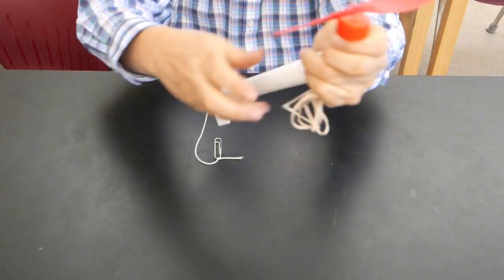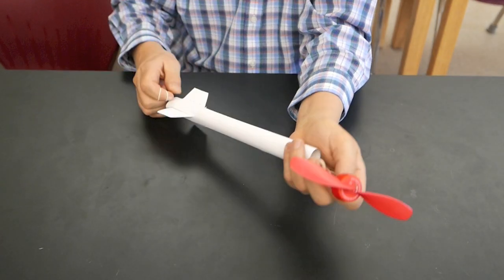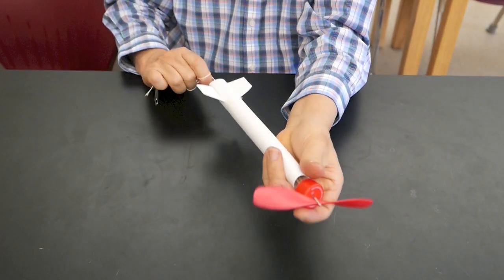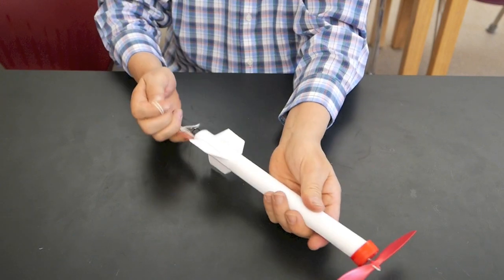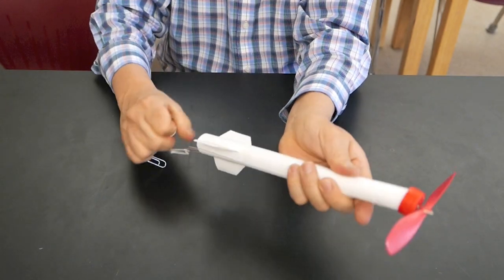There we go. Now I simply pull on the string, and that's going to stretch the rubber bands inside the tube. Now I'm simply going to take that paper clip and hook it on the bottom end of the tube. There we go.